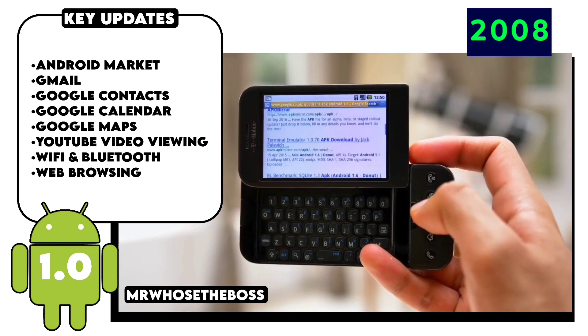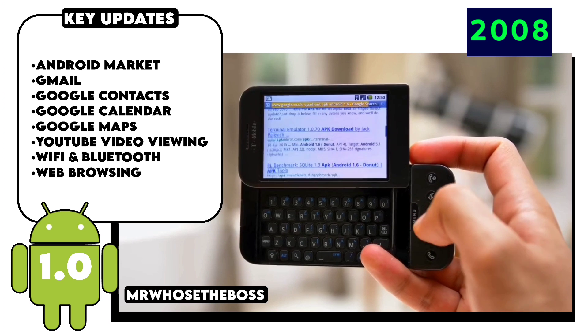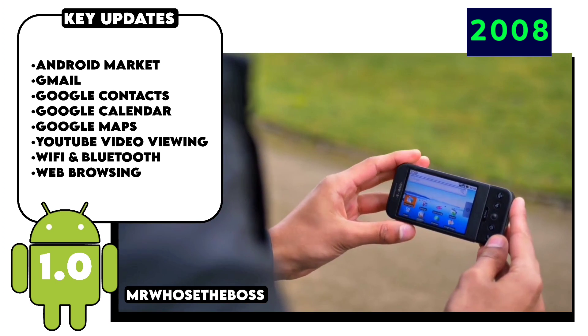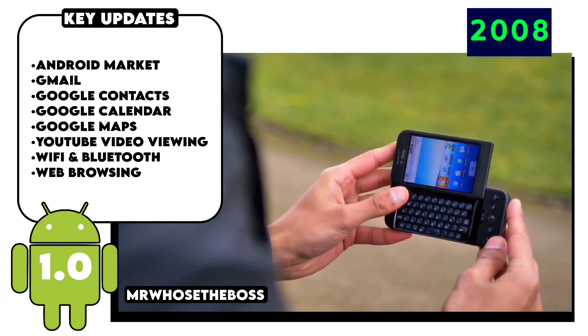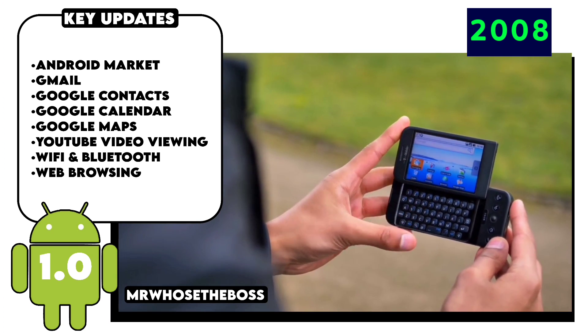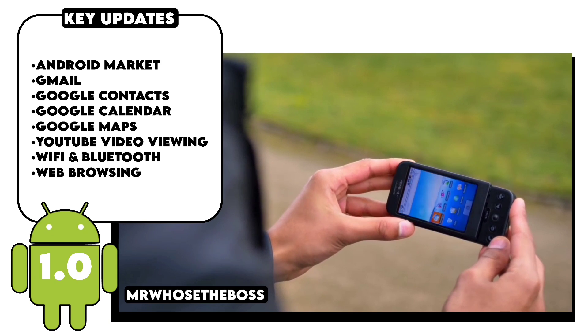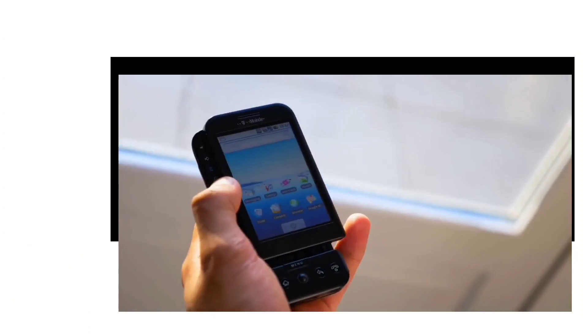The first version of Android had some early versions of Google's apps like YouTube, Gmail, and Maps, and it used to look something like this with a physical keyboard, as there was no on-screen keyboard yet.